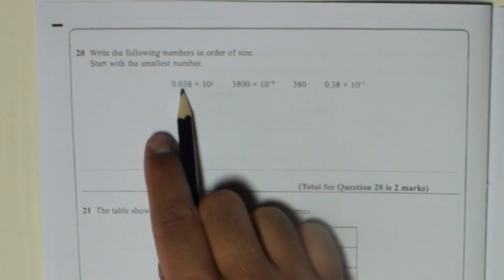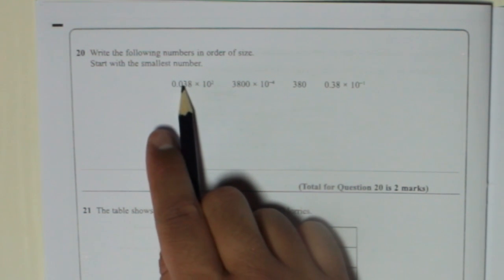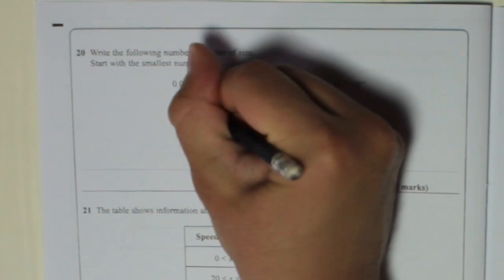So 0.038 times 10 to the power of 2 means 0.038 times 10, that's 0.38, times 10 again, 3.8.